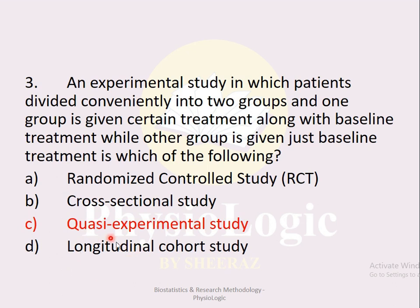Longitudinal cohort study is an observational study, so it is incorrect. Cross-sectional study is also observational, so it is not correct. The confusion is between RCT and quasi-experimental study. In a randomized control trial, individuals are divided randomly into two groups using simple random sampling. A quasi-experimental study lacks randomization or lacks a control group — that is the basic difference.